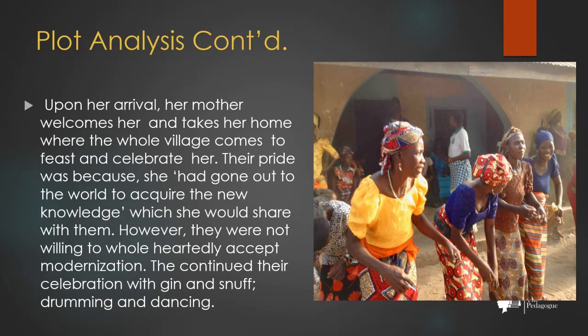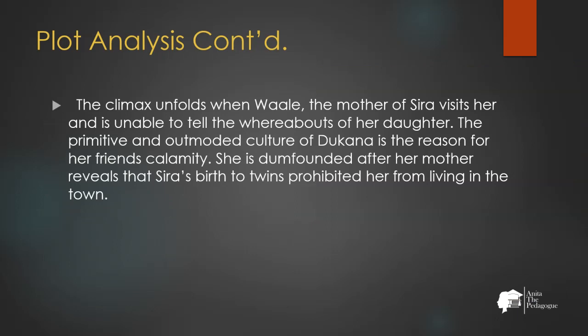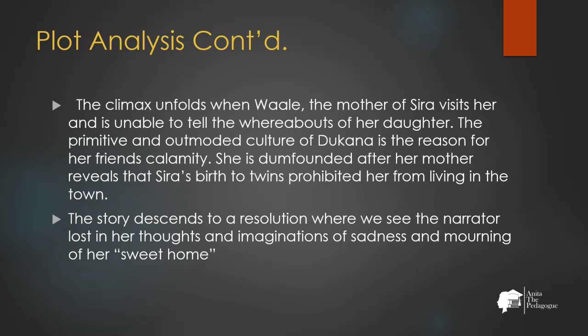However, they were not willing to wholeheartedly accept modernization and continued their traditional celebration. The climax unfolds when Wali, the mother of Sira — the narrator's best friend — visits and is unable to tell the whereabouts of her daughter. The primitive, outmoded culture of Dukana is the reason for her friend's calamity. The narrator is dumbfounded after her mother reveals that Sira's birth to twins prohibited her from living in Dukana. The story descends to a quick resolution where the narrator is lost in thoughts of sadness and mourning over her home sweet home.